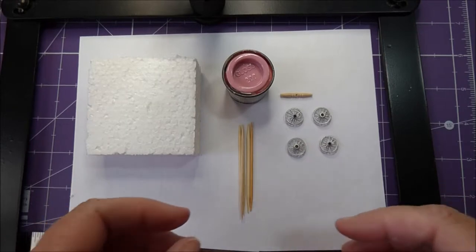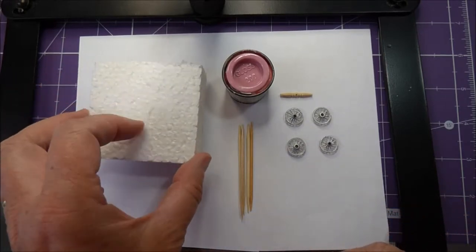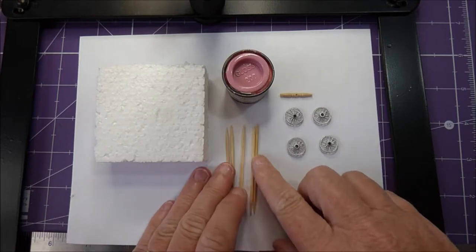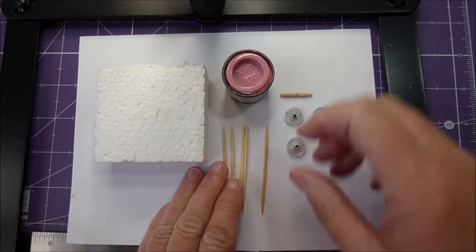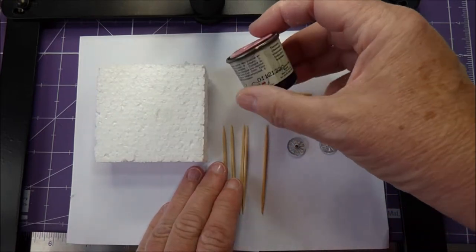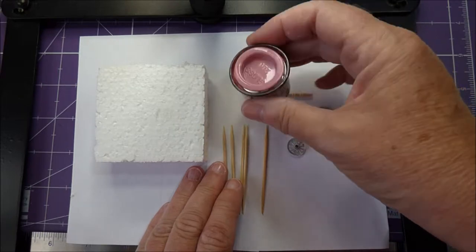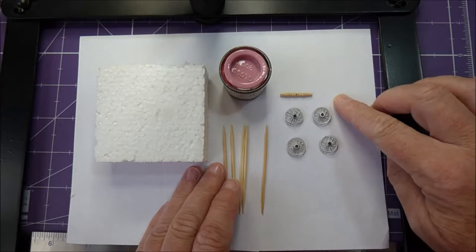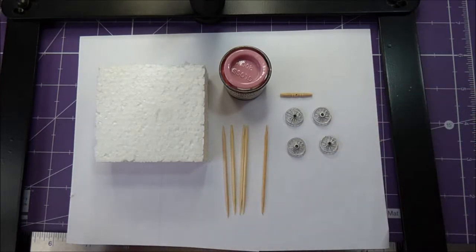Firstly you need to have a piece of polystyrene block, five wooden toothpicks, your choice of color of enamel paint from pack A, four metal wheels, and a wooden handle.